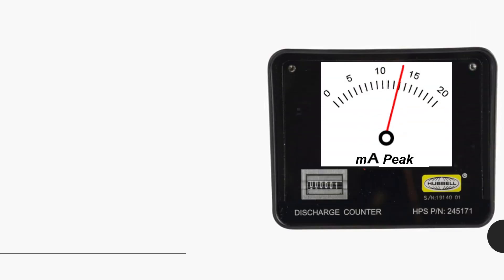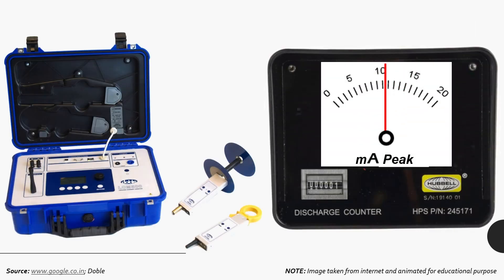While the first one gives idea about the total leakage current, the THRC methods give data about resistive leakage current.